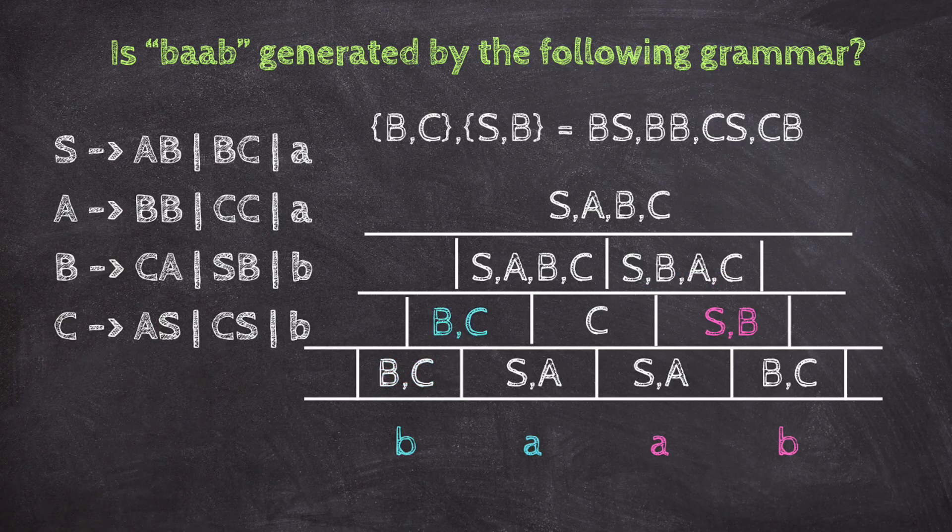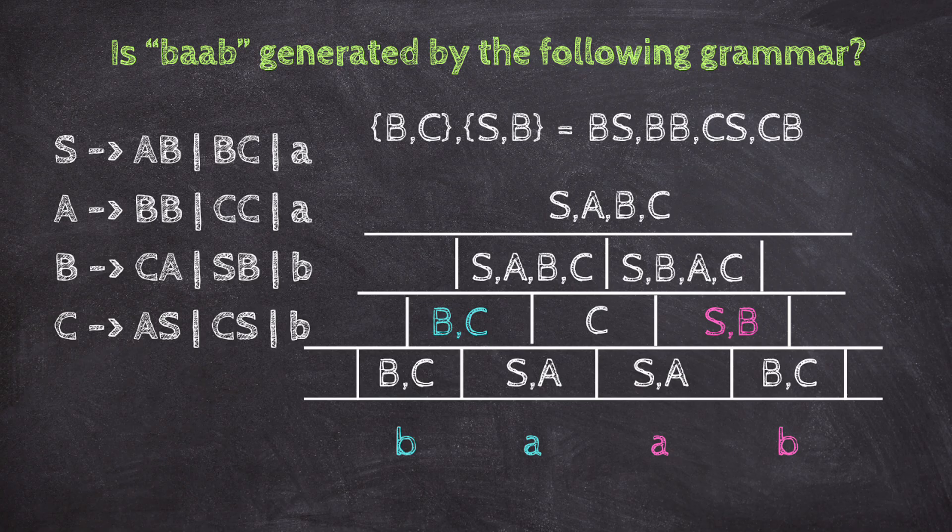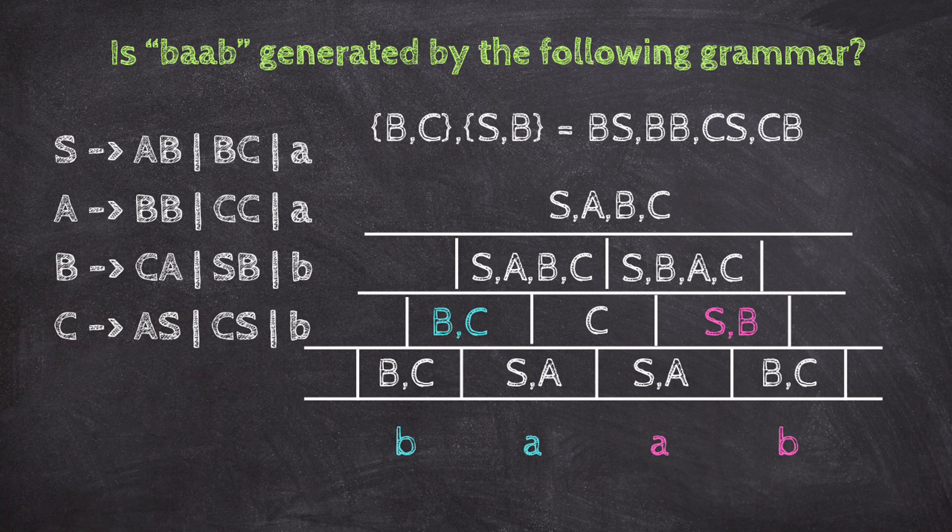Next, split as BA and AB. B, C from BA, and S, B from AB. Combinations: BS, BB, CS, CB. Again, A goes to BB, B goes to SB, C goes to CS. AC is already there, so nothing to add.